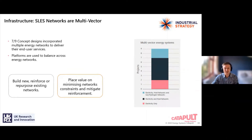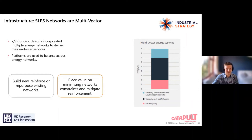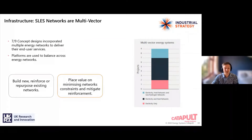Looking at what the concept designs indicated, smart local energy systems are likely to be multi-vector, with multiple energy networks providing end user services throughout the area. Most projects include the use of two or more networks. Generally, how it builds up is you start with electricity.